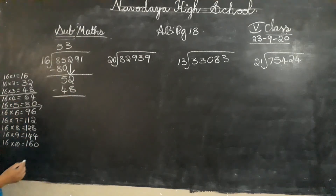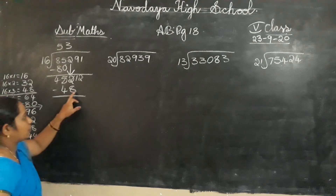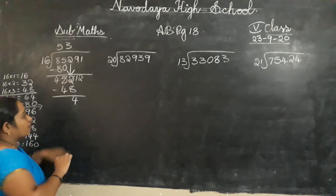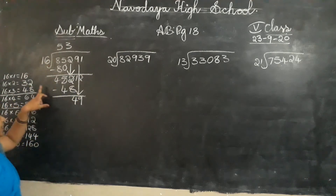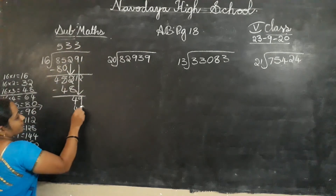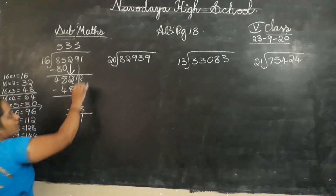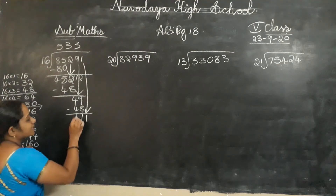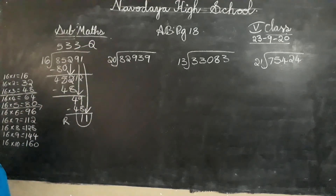85 minus 80 is 5. 5 divided by 16 — not possible. Write down next digit: 52. 52 in the 16 table — no. 52 is between 48 and 64, so 16 threes are 48. Subtraction: 2 minus 8 — not possible, borrow. 5 becomes 4, 2 becomes 12. 12 minus 8 is 4, 4 minus 4 is 0. Next digit: 49. 49 in the 16 table? No. Choose 48 — 16 threes are 48. 49 minus 48 is 1. 1 divided by 16 — not possible. Write down next digit: 11. 11 divided by 16 also not possible. Division is completed. 11 is the remainder, 533 is the quotient.